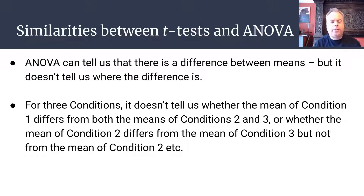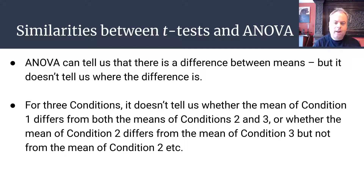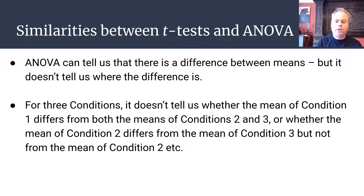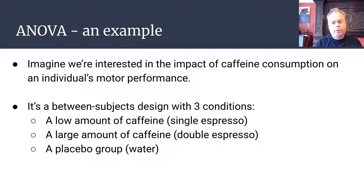Analysis of variance can tell us that there is a difference between our conditions — a difference between our means — but it doesn't tell us where the difference is. For three experimental conditions, if we build an analysis of variance model and it's significant, it by itself doesn't tell us whether the mean of condition one differs from both conditions two and three, or whether the mean of condition two differs from condition three but not condition one, and so on. So we need to do something else.